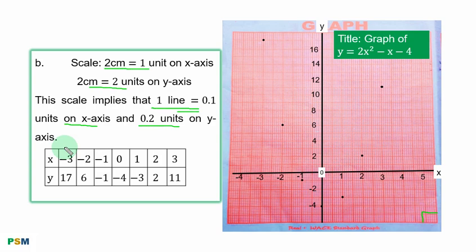We plot the first point. When S is minus 3, Y is 17. After 16, the middle way is 17. This is the point of intersection. You mark that point. Minus 2, 6. When S is minus 2, Y is 6. You mark the point of intersection.